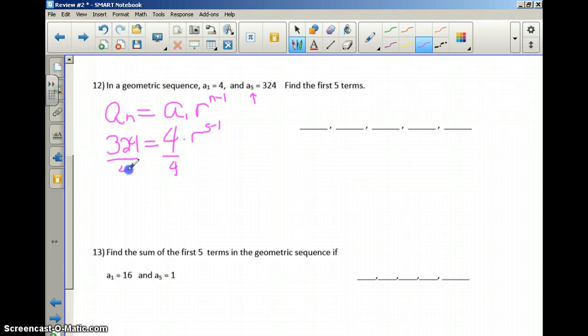If I divide both sides by 4, I find out that I have 81 equals r to the 4th power. So now if I want to cancel this, I'll use the reciprocal 1/4th. And on my calculator, if I take 81 to the 1/4th power, I'm going to get my common ratio is equal to 3. Now if my common ratio is 3, and I start at 4, I'm going to say 4 times 3 is 12. 12 times 3 is 36. 36 times 3, 108. And then finally, 108 times 3, 324.